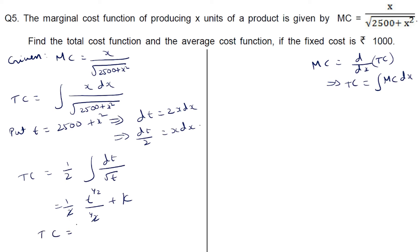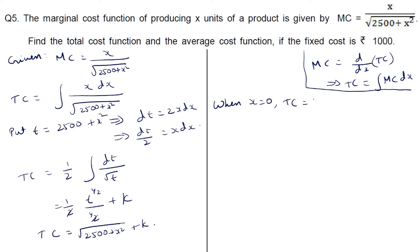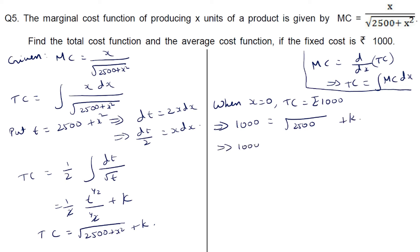Substituting back for t, total cost equals root of (2500 plus x squared) plus k. Fixed cost is rupees 1000, meaning when x is 0 total cost is 1000, because when output is 0 there is no variable cost, so total cost equals only the fixed cost. Substituting: 1000 equals root of (2500 plus 0) plus k, and root of 2500 is 50. So k equals 1000 minus 50, which is 950.